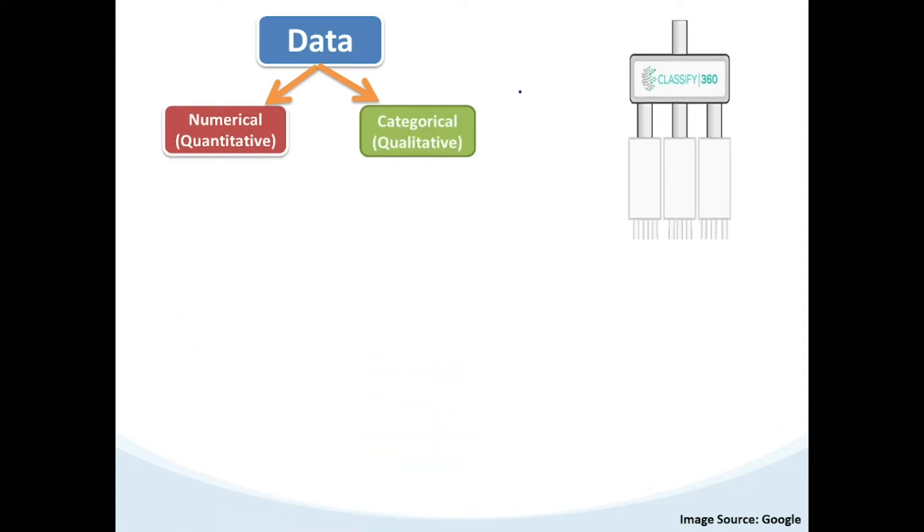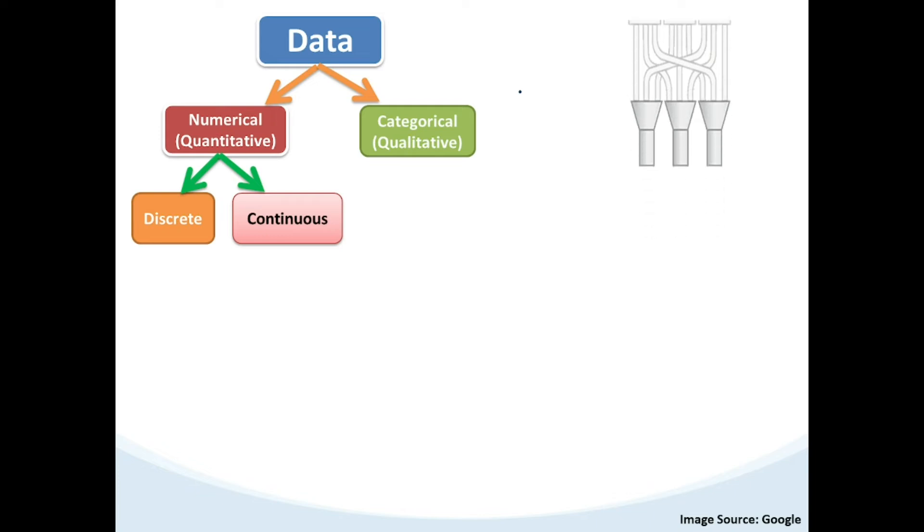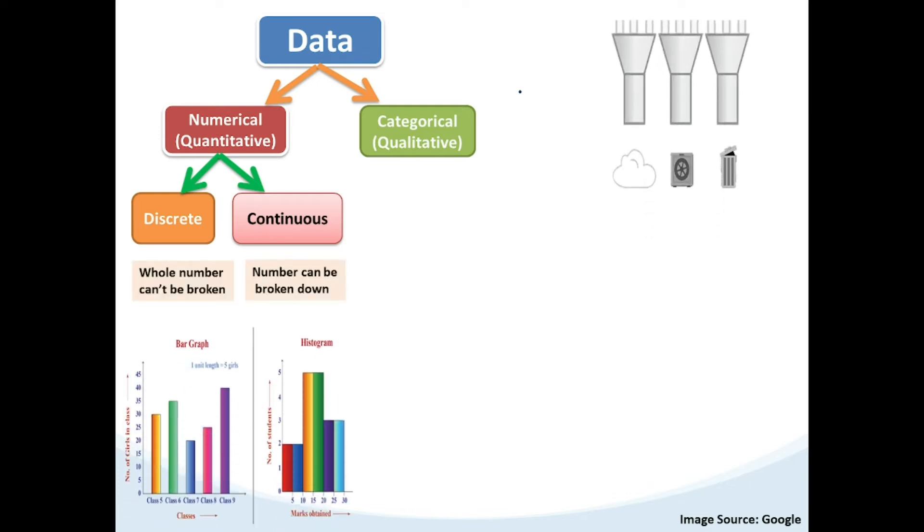Data are categorized as numerical and categorical data. Numerical data is also referred as quantitative data which are measurable, which in turn is classified as discrete and continuous data. The bar chart representation is an example of discrete type while histogram is continuous one.